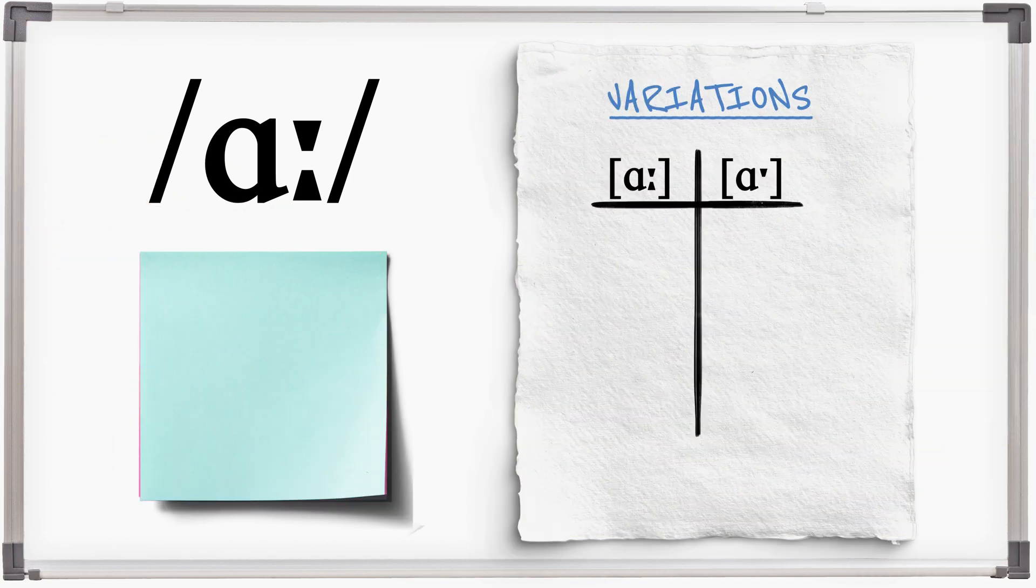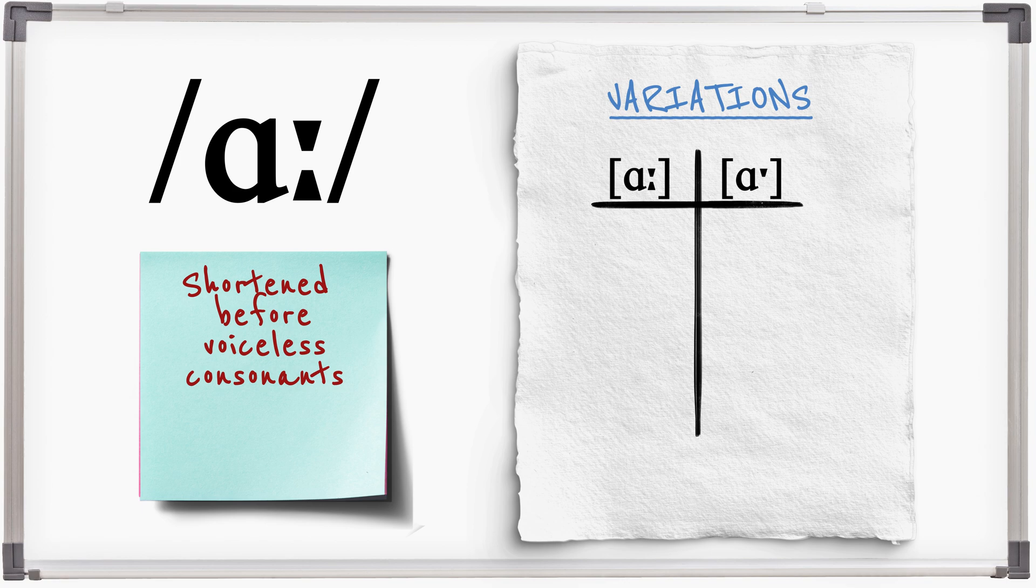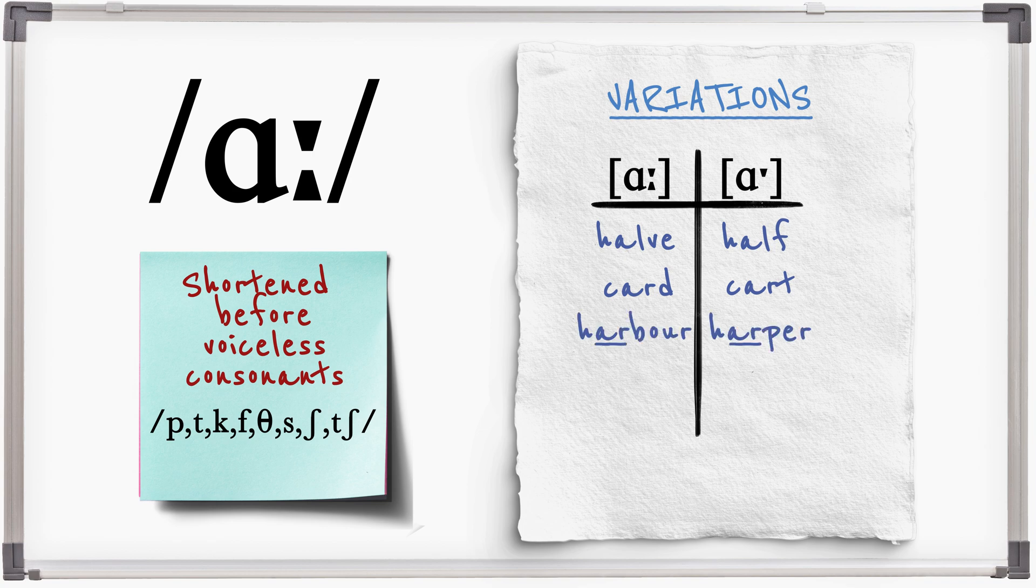R is a long vowel sound and does shorten slightly before voiceless consonants. Half, half, card, cart, harbour, harper, marge, march.